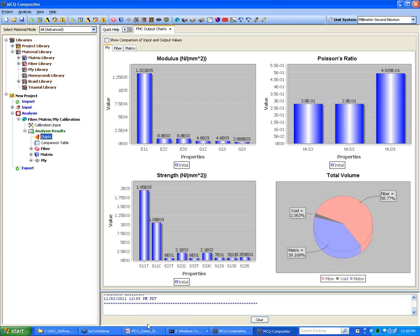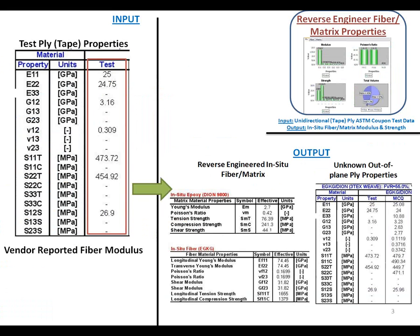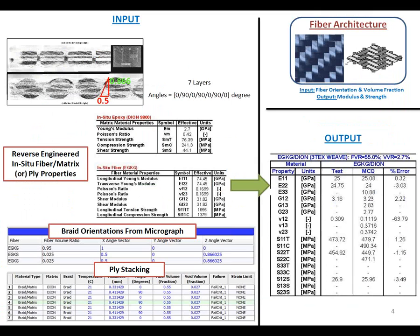Next, I'm going to show you how, once you have your fiber matrix properties, you can use them as input. You can define a braid angle for out-of-plane braid cards. As you see in the upper right-hand side, a micrograph is shown in the upper left corner of the screen. Here we will enter the fiber matrix properties we just calibrated.